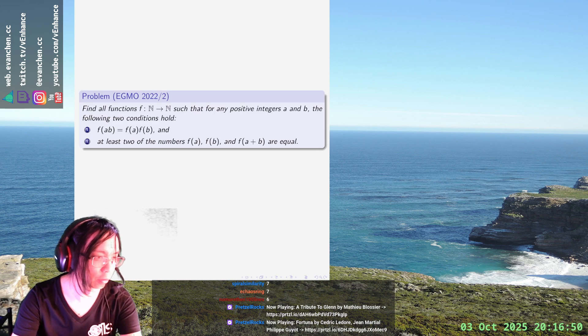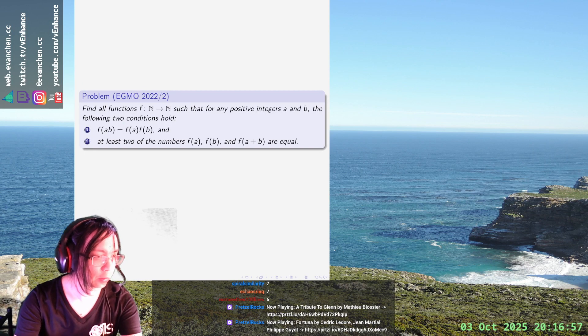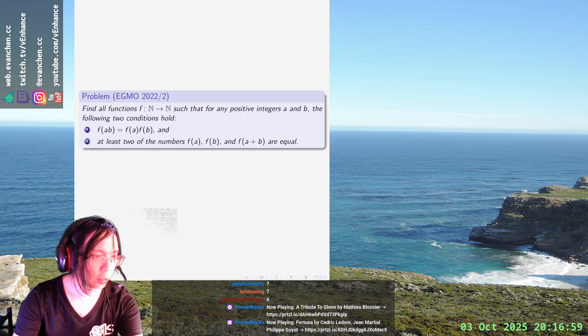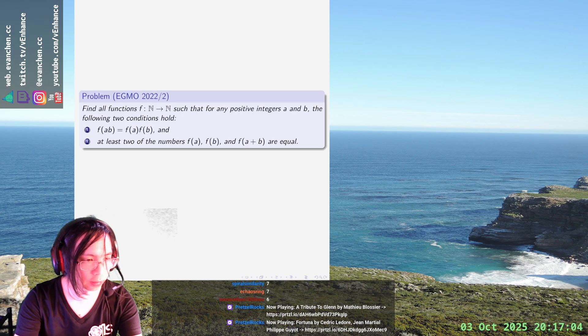From condition one, we're going to completely encode that. This is a statement that f is completely determined by its values at prime powers, so f(p) equals...